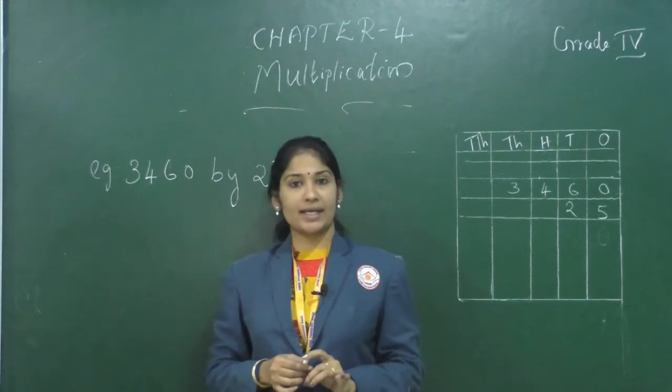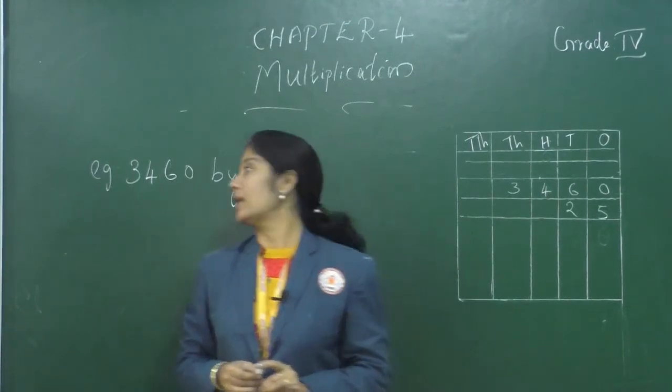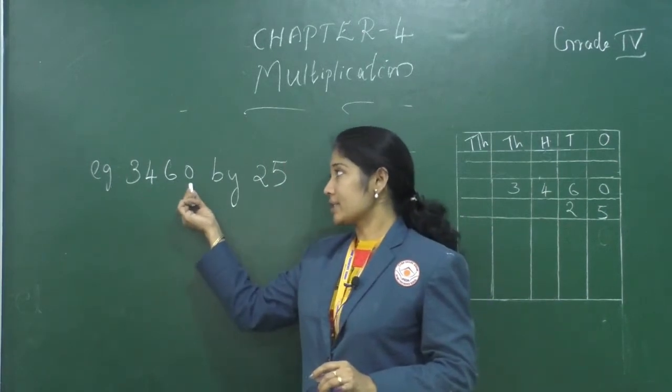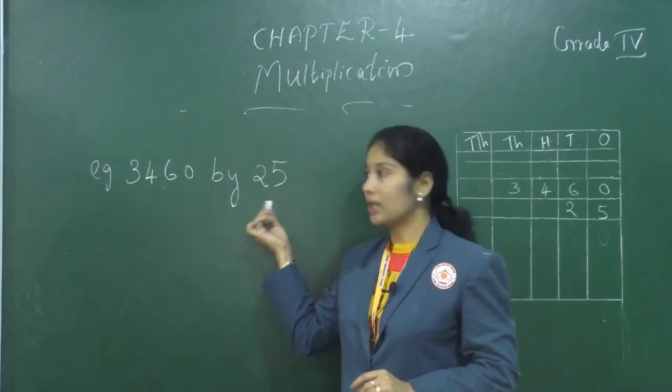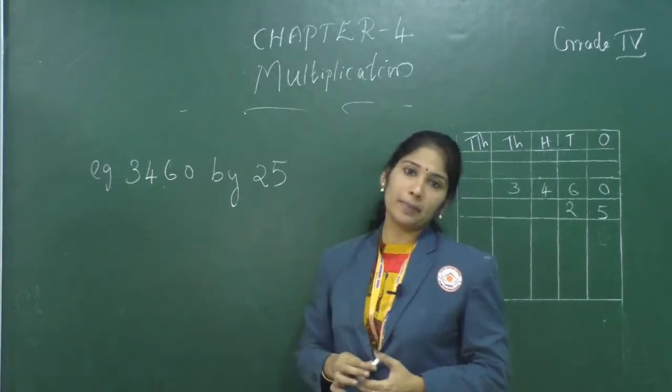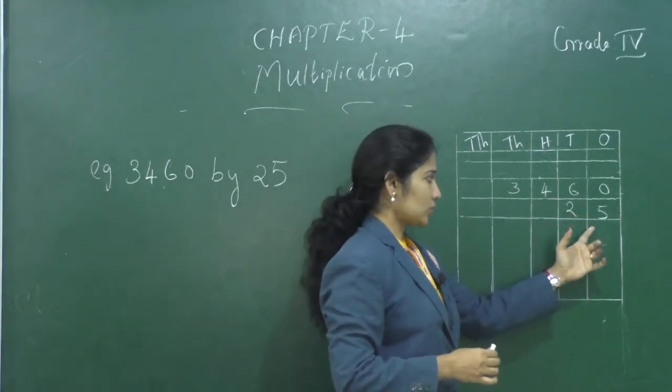Children, let's take an example of multiplying a four-digit number by a two-digit number. Here, 3460 is the multiplicand and 25 is the multiplier. These numbers we can write in a place value chart. So, 3460 into 25.